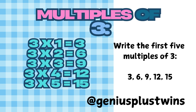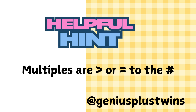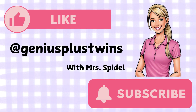The next example is finding the multiples of 3. To find the multiples of 3, we skip count by 3s or multiply 3 by a whole number, starting with 3: 3, 6, 9, 12, and 15. Those are the first five multiples of 3. If we wanted to continue skip counting or multiplying by another whole number, we can do that. Here's a helpful hint: multiples are greater than or equal to the number itself. That's all for now — till next time.